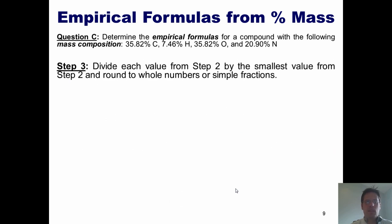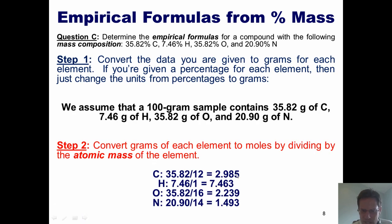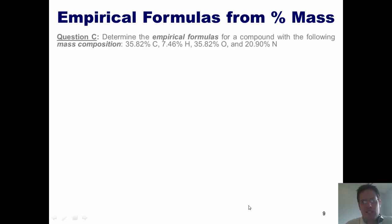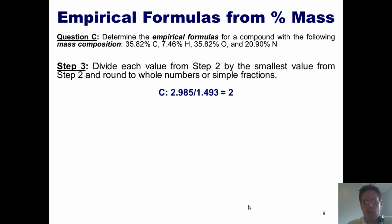Step three, divide each value from step two by whichever of those values was the smallest. So we'll go back. Look at all these numbers. Which of these guys is the smallest? You'll notice that 1.493 is the smallest, which means that in order to do step three, I'm going to divide each one of these by 1.493. Let's go ahead and show that. 2.985 divided by 1.493 gives really close to two, and I just round it. 7.463 divided by the same gives me five. 2.239 divided by 1.493 gives me 1.5. And 1.493 divided by itself gives me one.